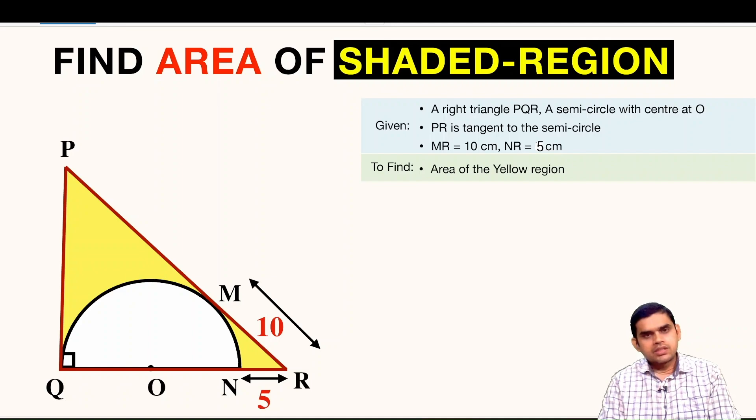In order to find the area of this yellow region, first we have to find the area of this right triangle PQR and then we can subtract the area of this semicircle from it. So finally we will get the area of the shaded region.